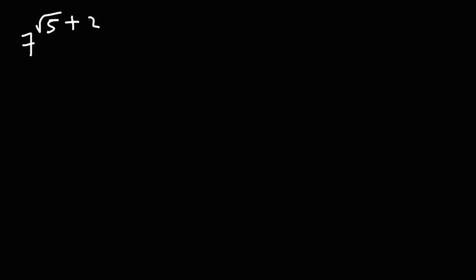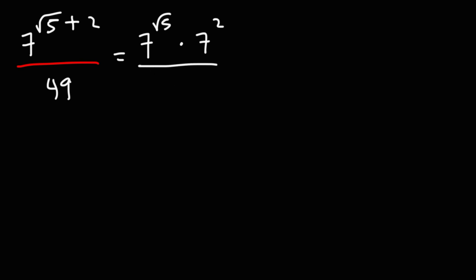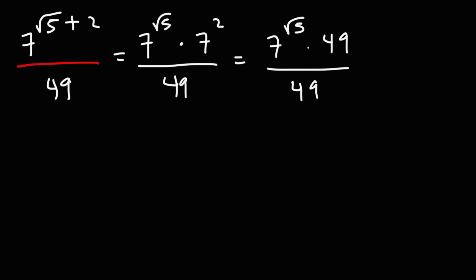For 7^(√5+2) divided by 49: we have the sum of two exponents, so expand through multiplication. This becomes 7^√5 times 7² over 49. Now 7 squared is 7 times 7, which is 49. The two 49s cancel, so our answer is 7^√5.